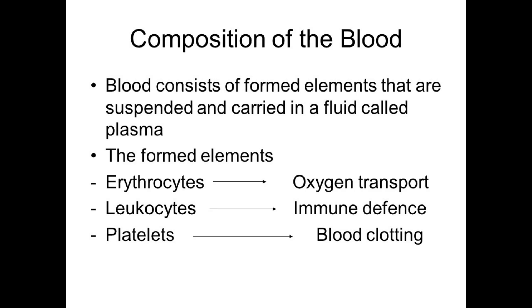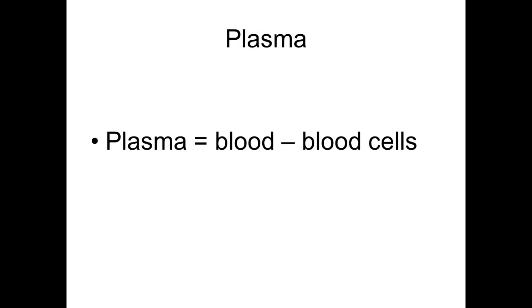Blood consists of formed elements suspended in a fluid called plasma. The formed elements are three types: erythrocytes (function: oxygen transport), leukocytes (function: immune defense), and platelets (function: blood clotting). Simply put, plasma equals blood minus blood cells.